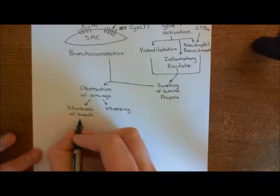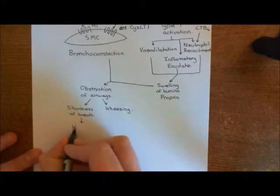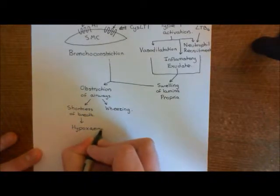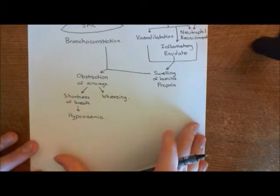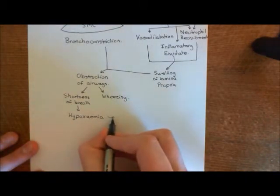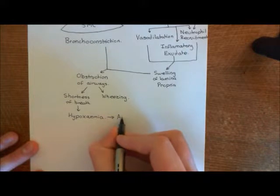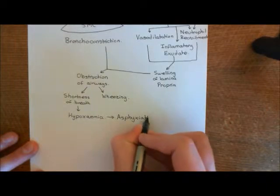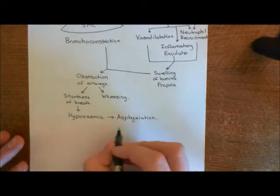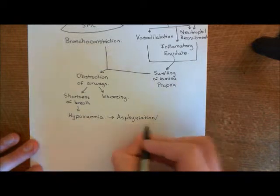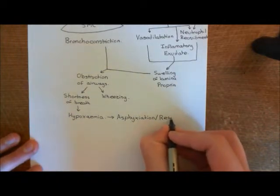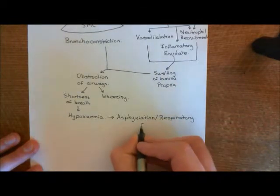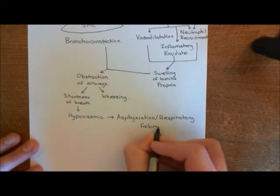This could potentially lead to hypoxemia, meaning too low a blood level of oxygen. If the peripheral tissues are not getting enough oxygen, this could potentially lead to asphyxiation — or respiratory failure — because the respiratory system is failing the rest of the organs of the body. That is what happens in the immediate phase of an asthmatic attack: swelling of the lamina propria and contraction of the smooth muscle cells.